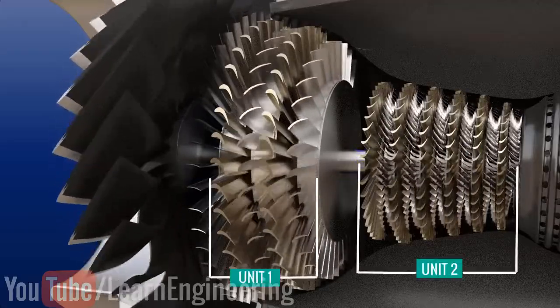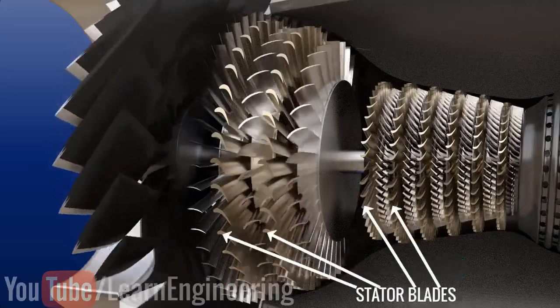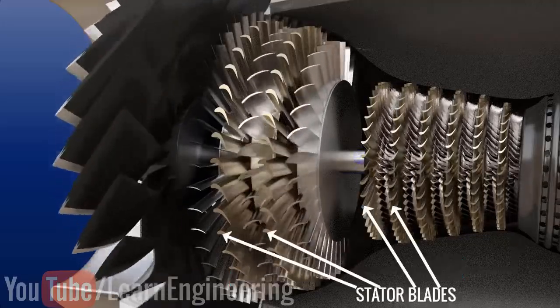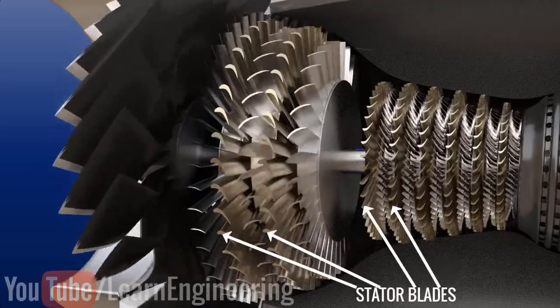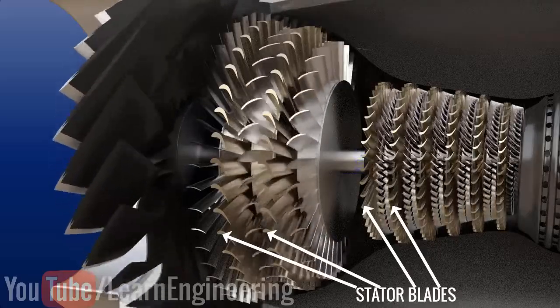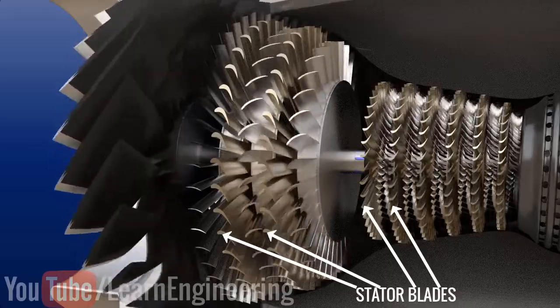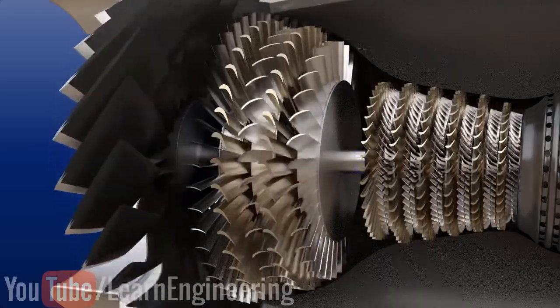You can see more details of the compressor here. The stator blades are attached to the casing and they make sure that the compressor rotor blades receive the airflow at the correct angle. The compressor rotor blades have an airfoil cross section.